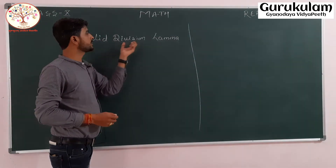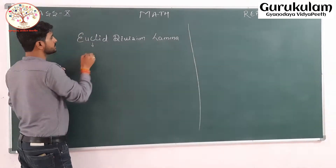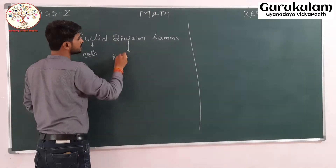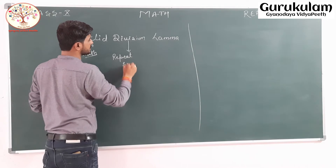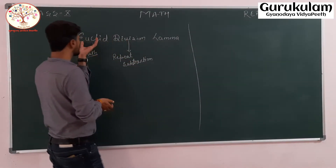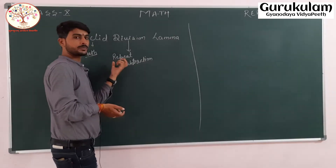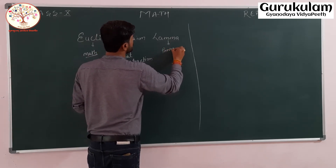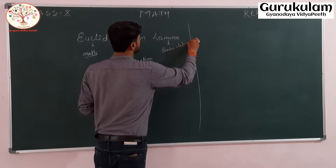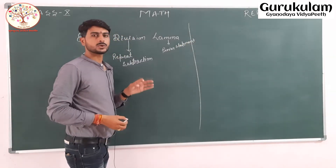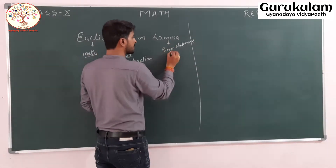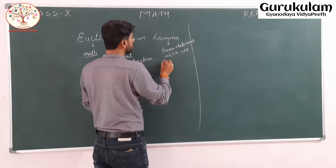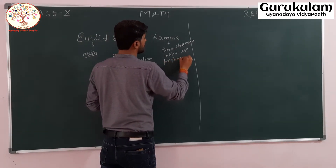We will discuss these three words one by one. Euclid was a mathematician. Division is nothing but repeated subtraction. Lemma is a proven statement — an already proven statement which is used to prove another statement.